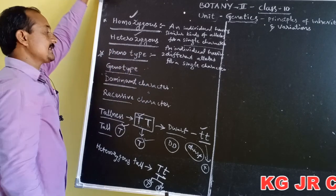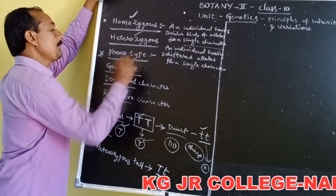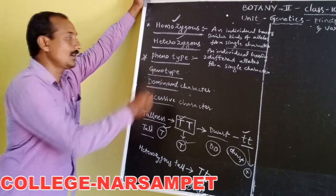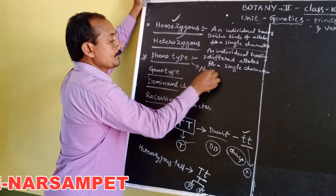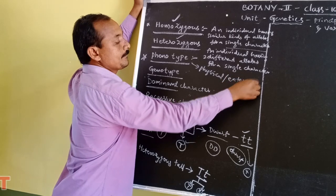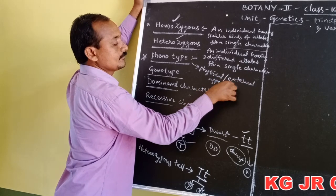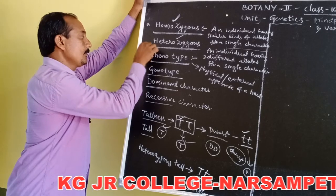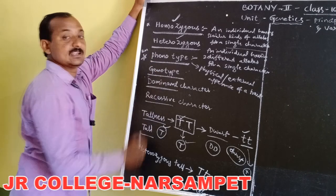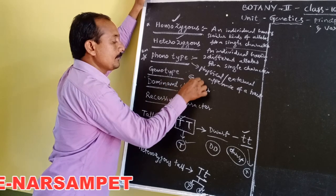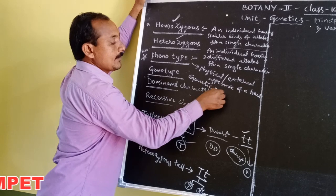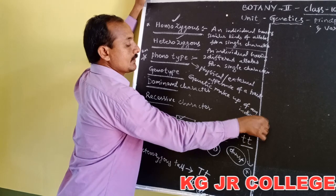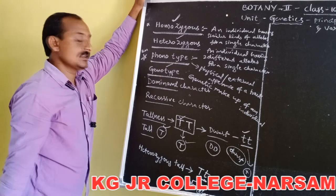Phenotype means the physical or external appearance of a trait. Genotype means the genetic makeup of an individual. These are two important definitions.